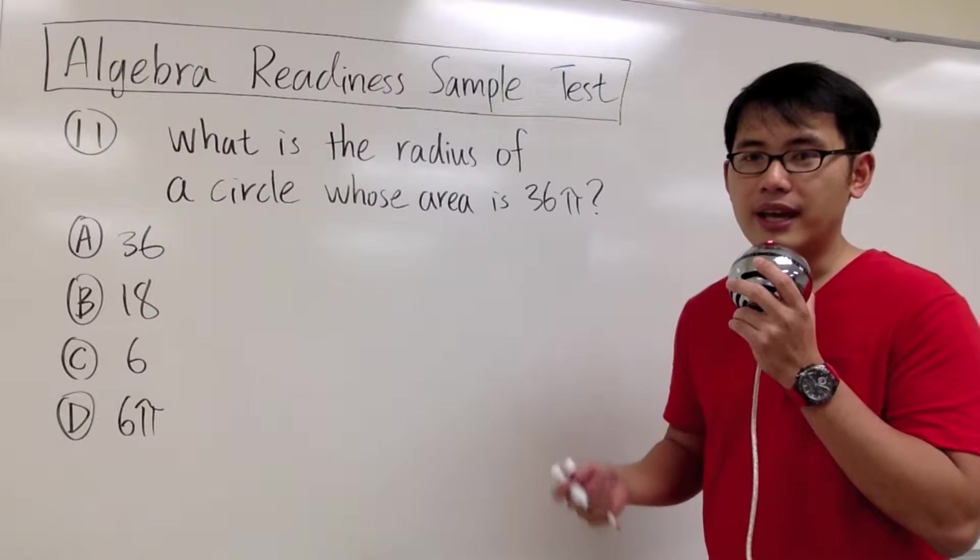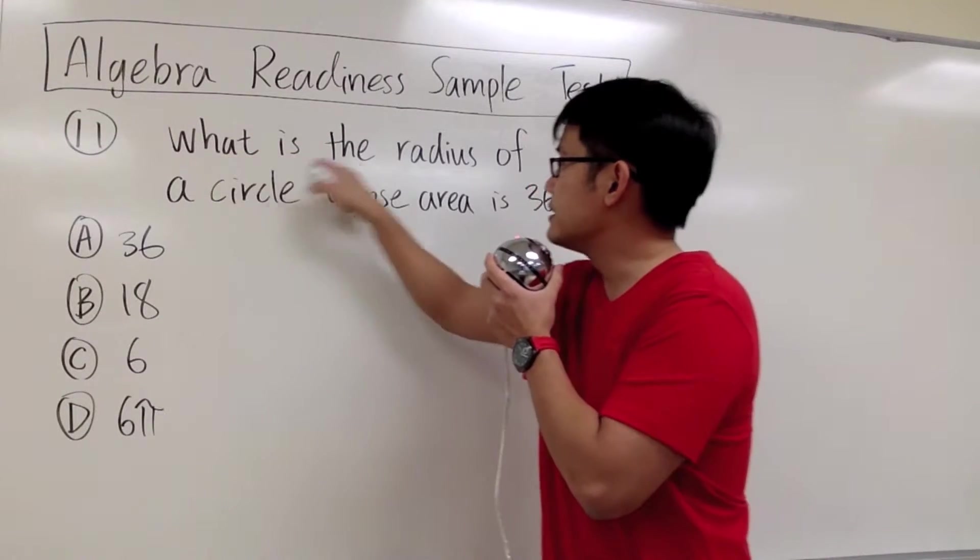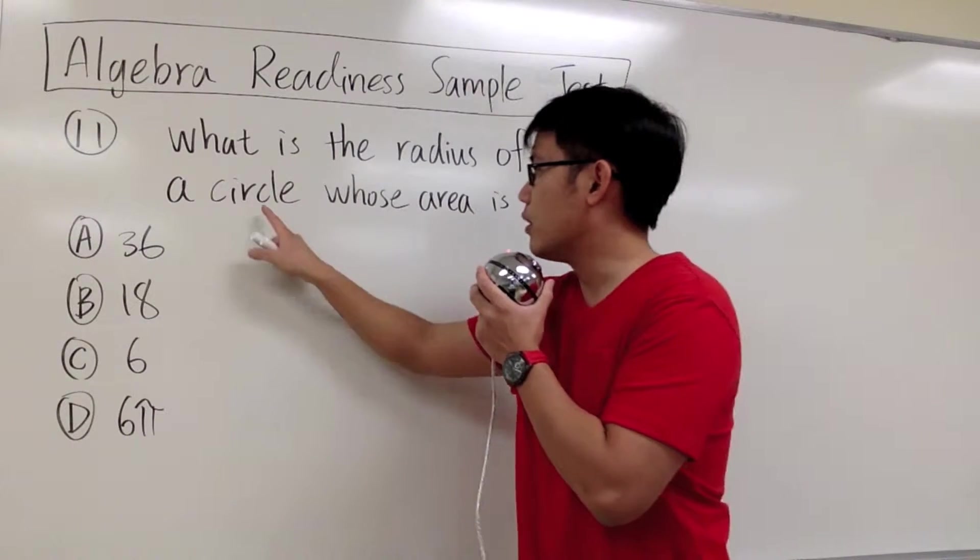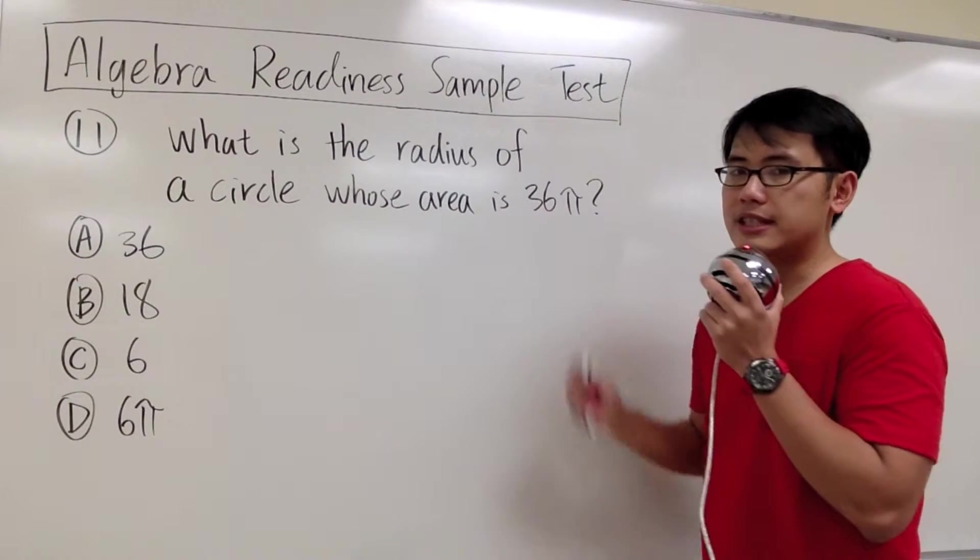Number 11 is a geometric question, and it's asking us what is the radius of a circle whose area is 36π.